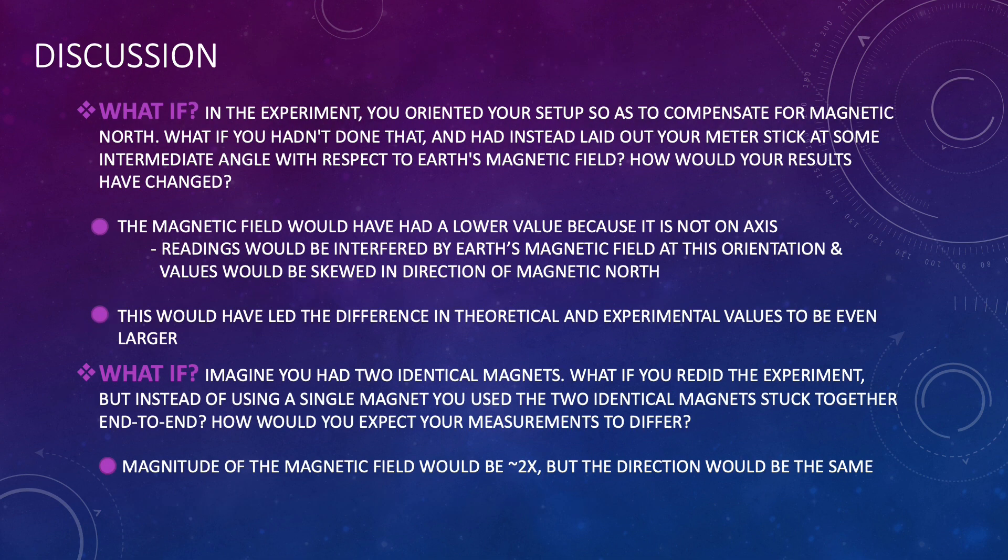If I didn't compensate for magnetic north in the beginning then the Earth's magnetic field in the y direction would have interfered more so with my experiment and the values would be skewed. There would have been even a bigger difference between the theoretical and experimental values.